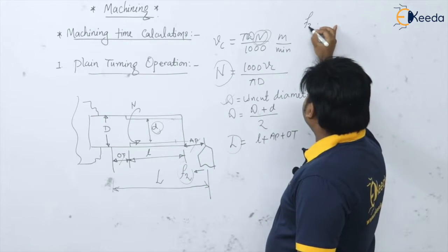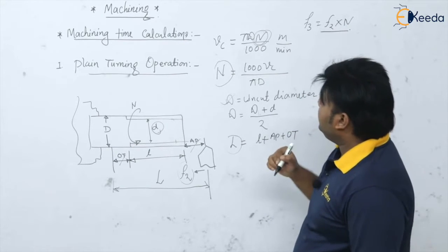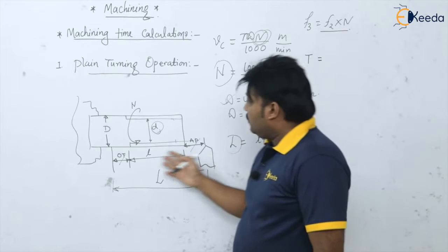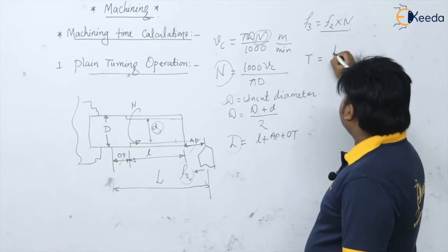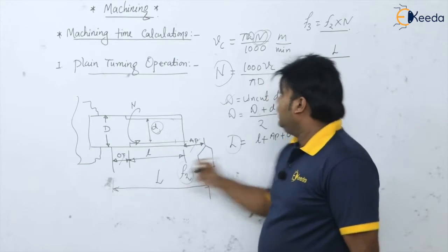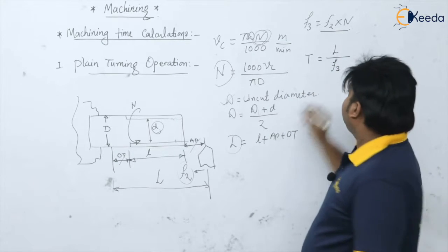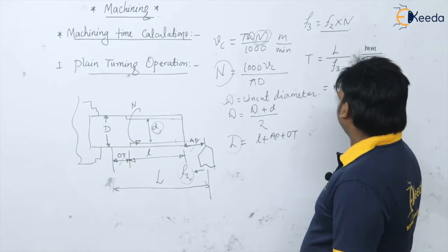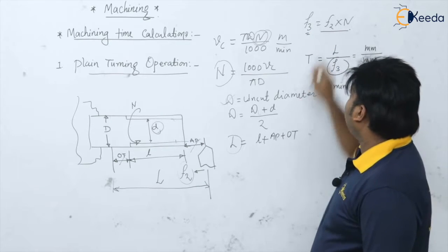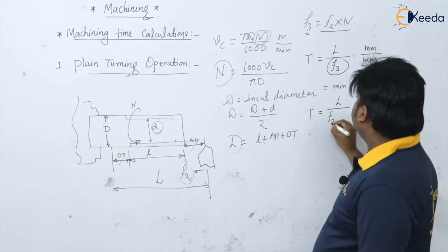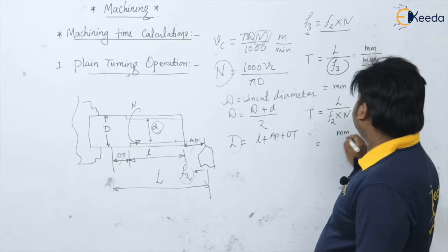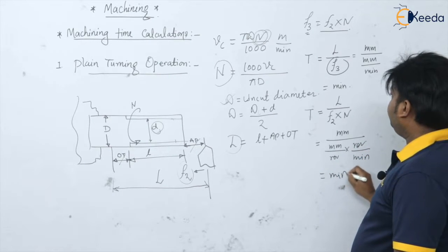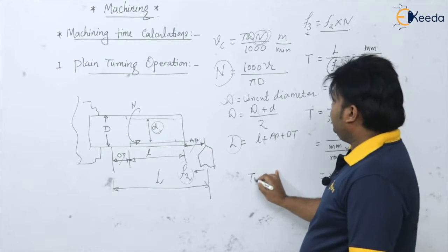The formula for machining time for a single cut is: time equals total length of tool travel divided by the table feed (f3, in mm per minute). The unit works out to minutes. Equivalently, since f3 = f2 * N, time also equals L divided by f2 times N — which is mm divided by (mm/rev × rev/min) — giving minutes again.